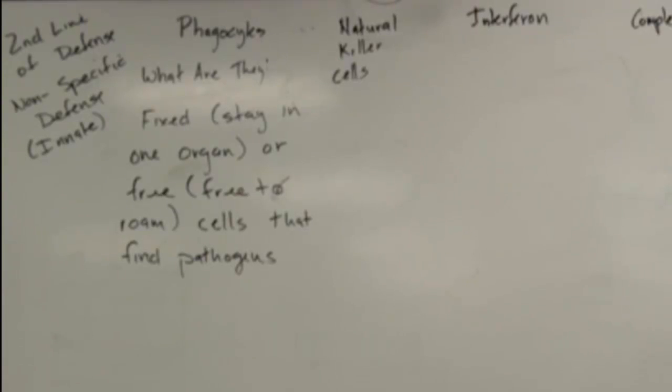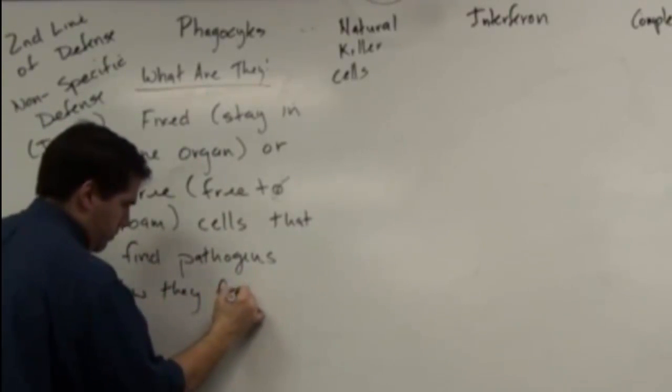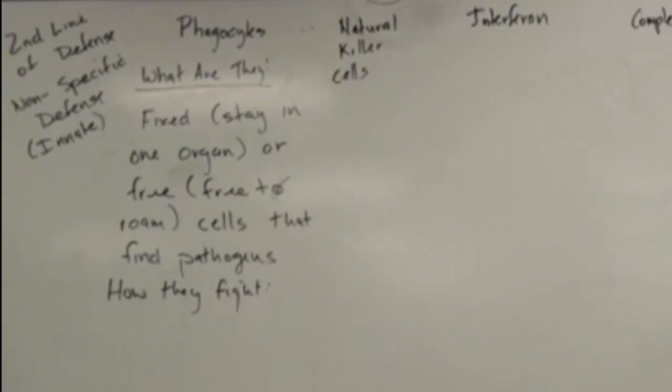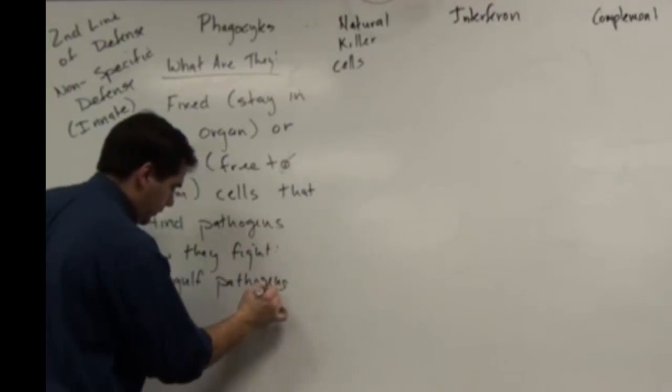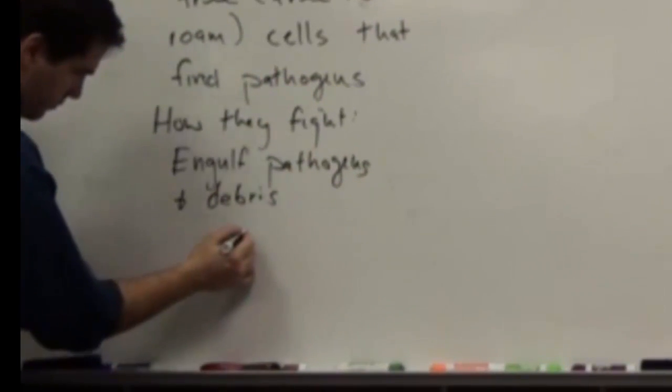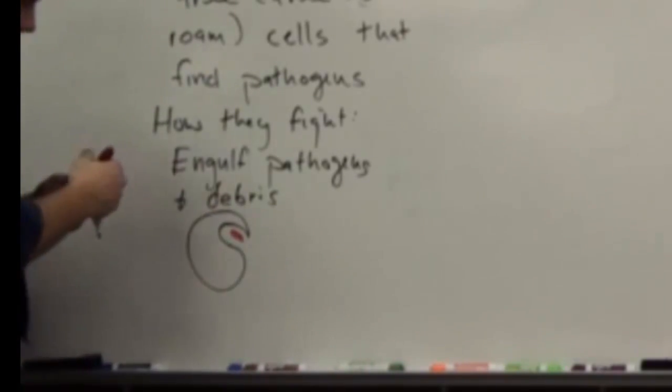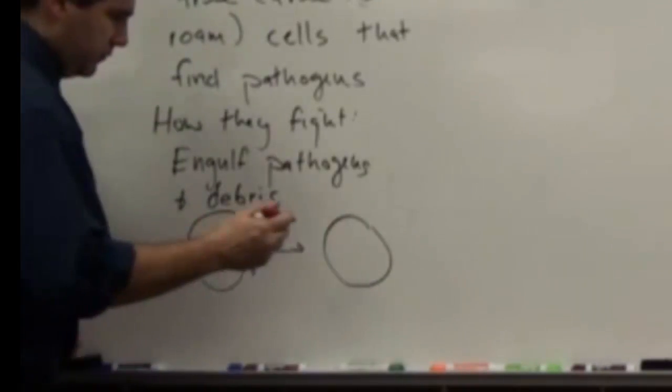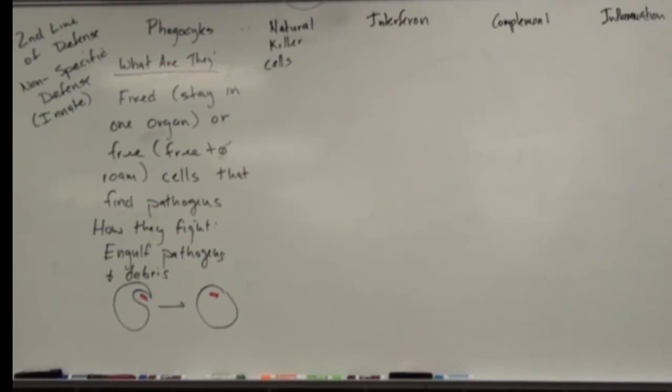Cells that find pathogens. How they fight is they engulf, swallow up, break them down with their lysosomes. There are a variety of cells we'll get to when we talk about blood, like neutrophils, eosinophils.